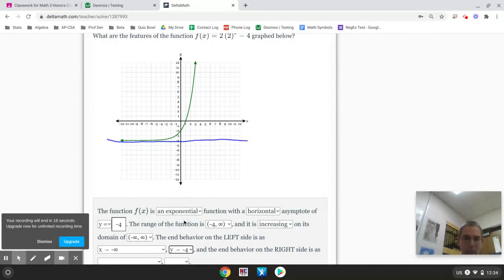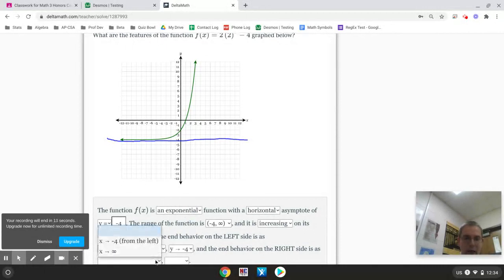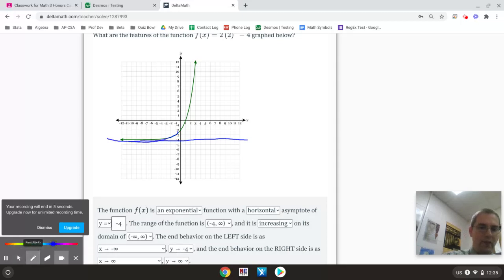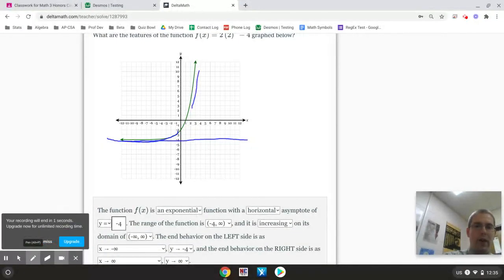On the other side, it's going to positive infinity. And y is also going to positive infinity. Because you can see on the one side, it gets stuck at negative 4. On the other side, it keeps going.